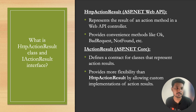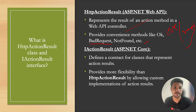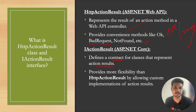The next question is: what is the HttpActionResult class and the IActionResult interface? The HttpActionResult class represents the result of an action method in a Web API controller. It provides convenience methods like Ok(), BadRequest(), and NotFound(). Use Ok() when validation is successful and you have a proper response to return. Use BadRequest() or NotFound() for validation failures or invalid input parameters. IActionResult is an interface — a contract for classes implementing action results. It provides more flexibility, allowing you to create custom action result classes that implement this interface.